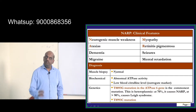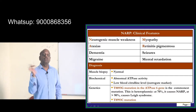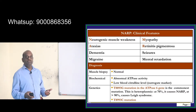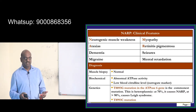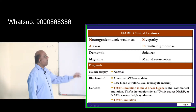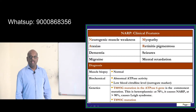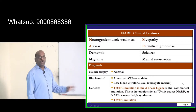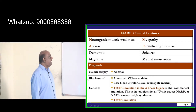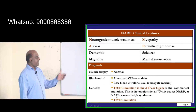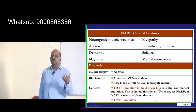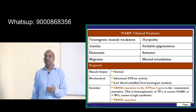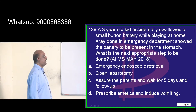If you do the muscle biopsy it will be normal. Biochemically, you will find abnormal adipase activity and low levels of citrulline in the blood, which is an important surrogate marker. Genetically, mitochondrial inheritance is what you need to remember.